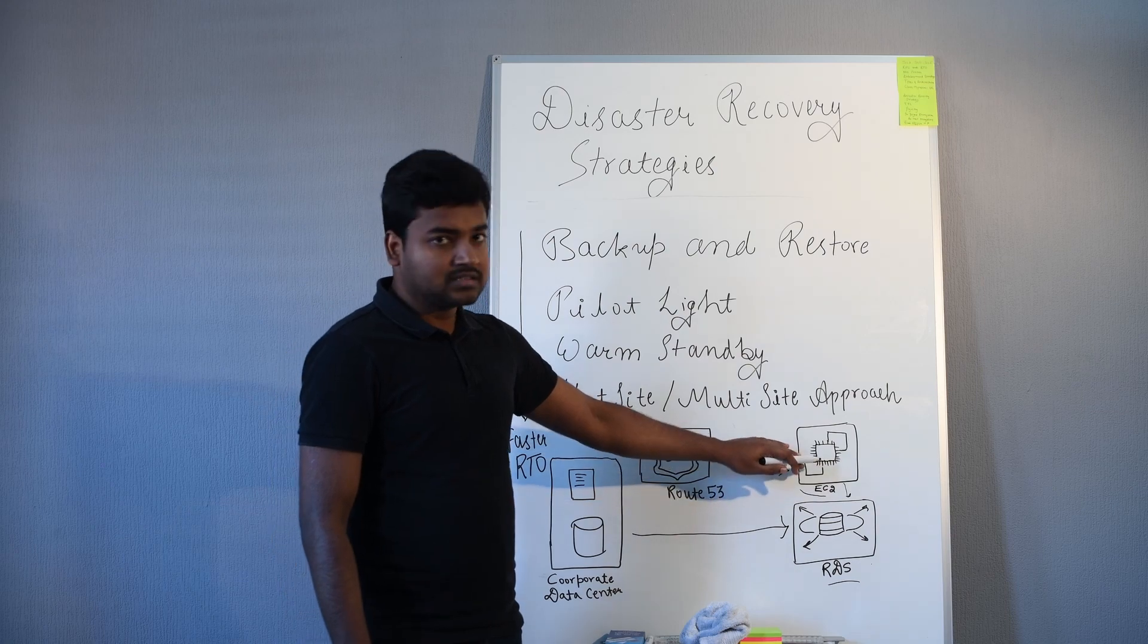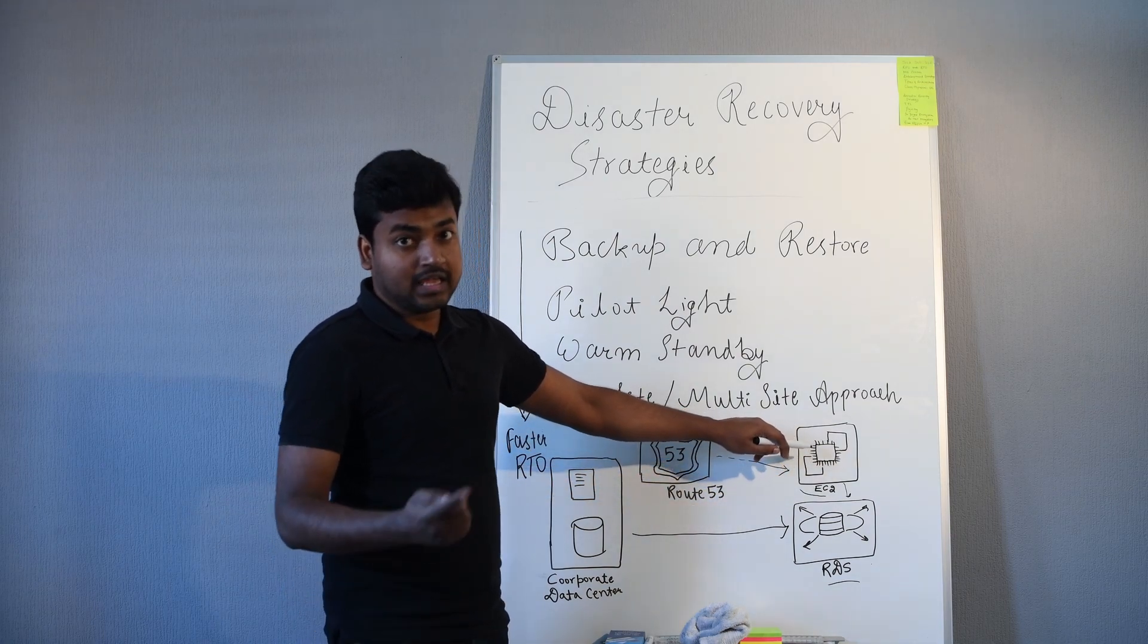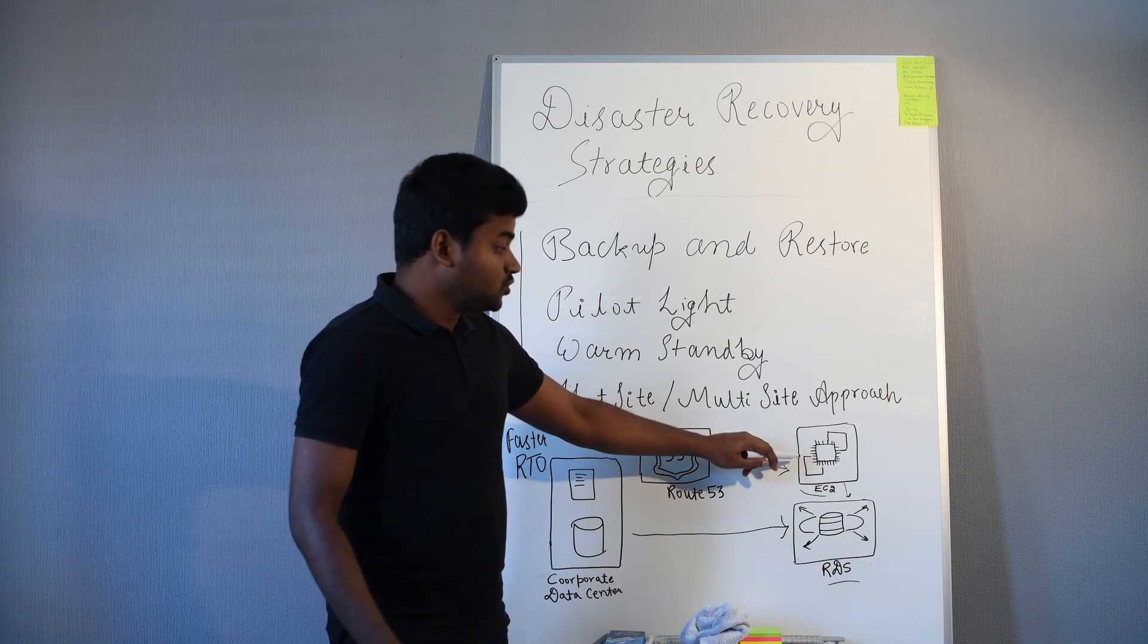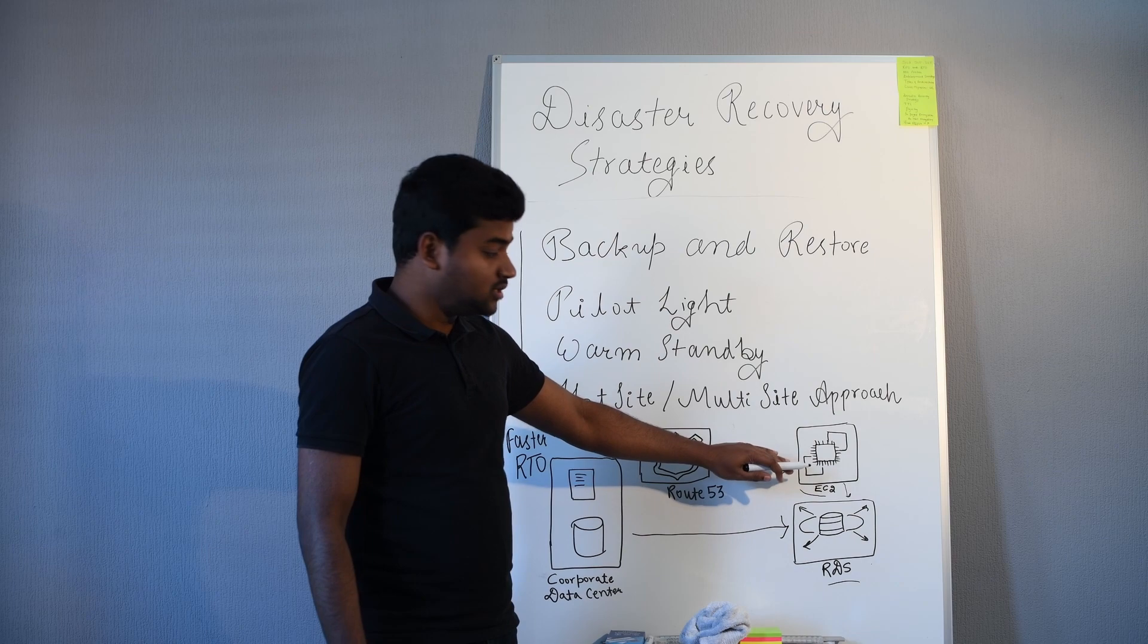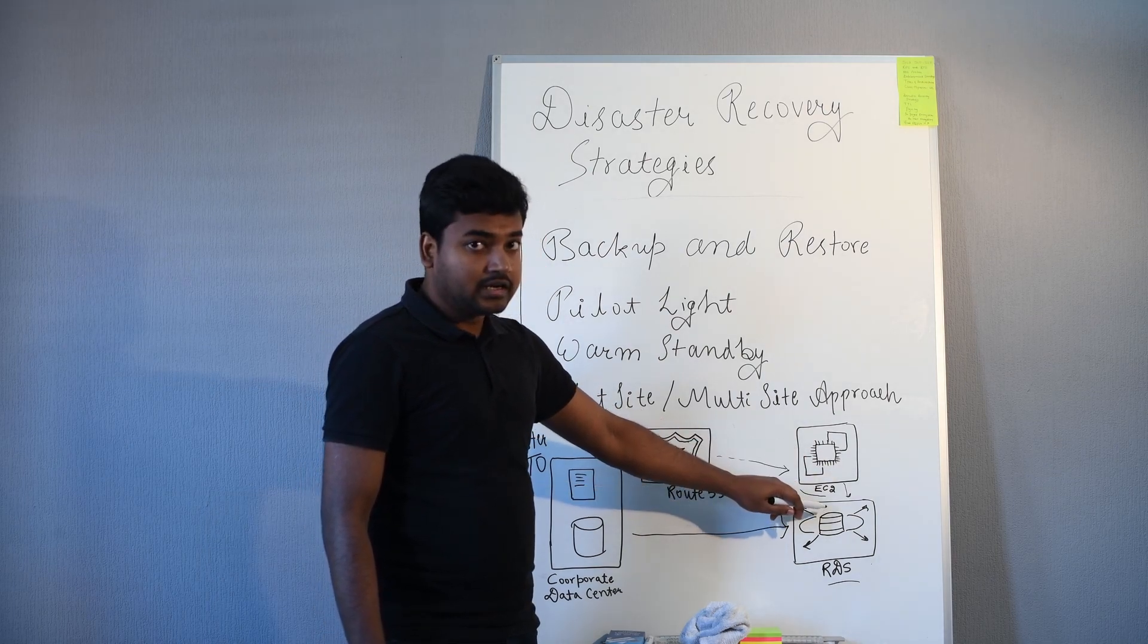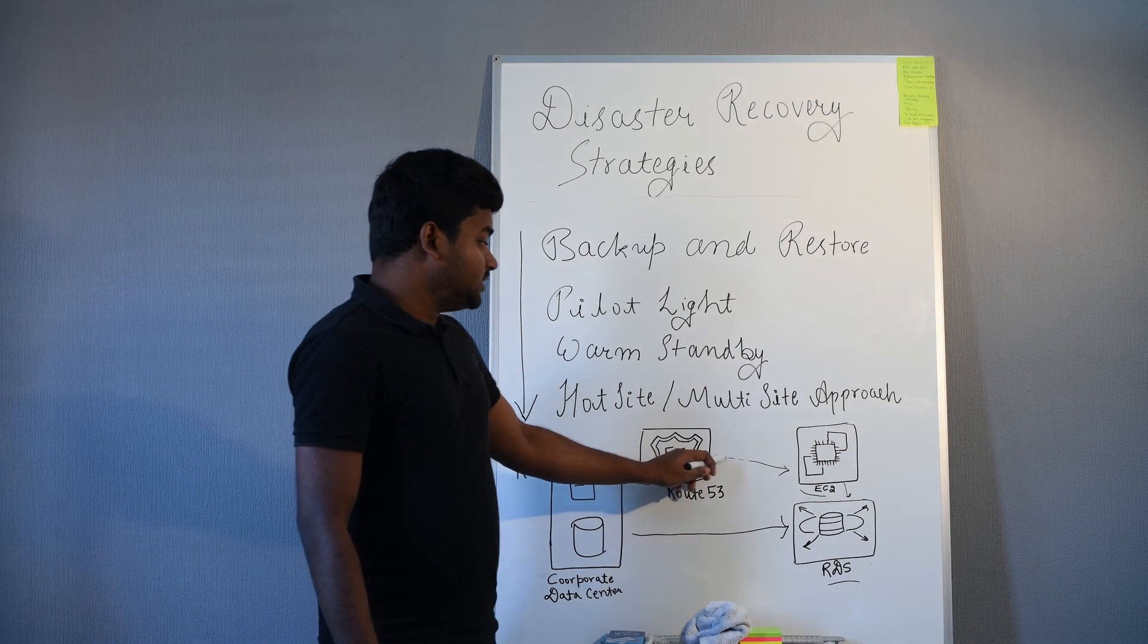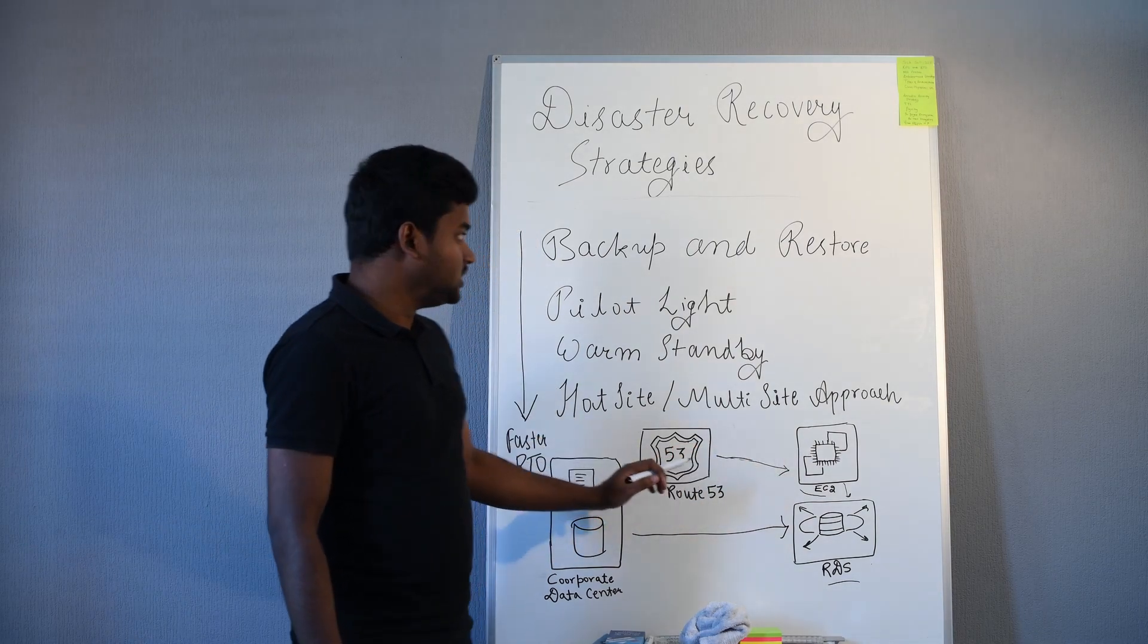Once everything is ready—this will take some time—and how EC2 will be launched? EC2 will be launched from the AMI which we had. It launches from the AMI, and once everything is ready, the application is up and running. The EC2 is connected to RDS, and Route 53 will redirect the traffic to our EC2 machine. This is pilot light.